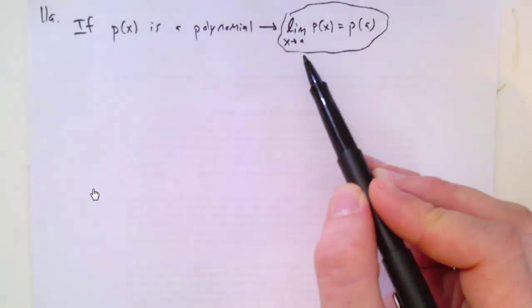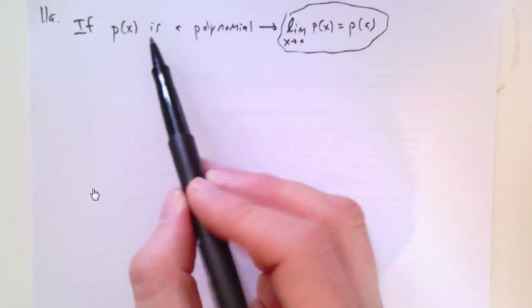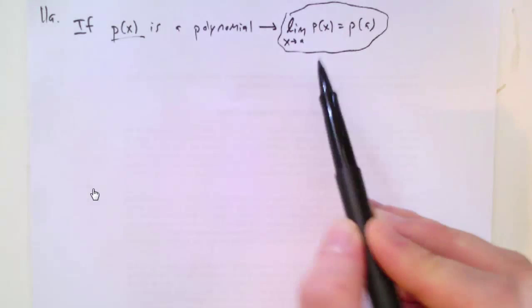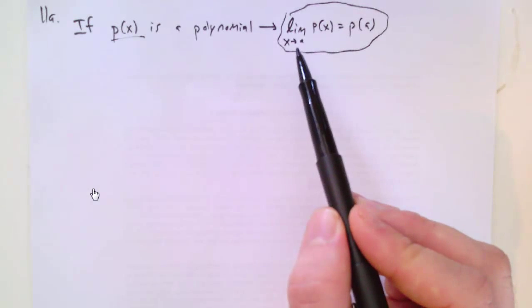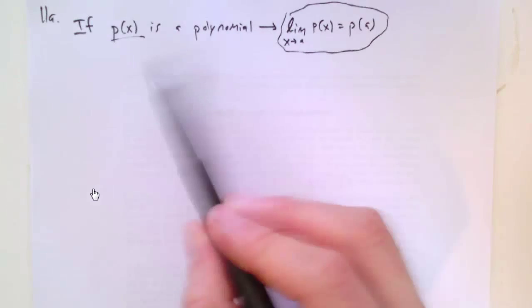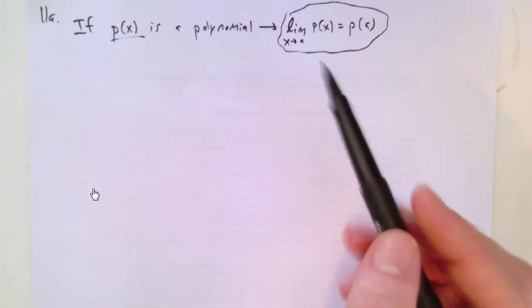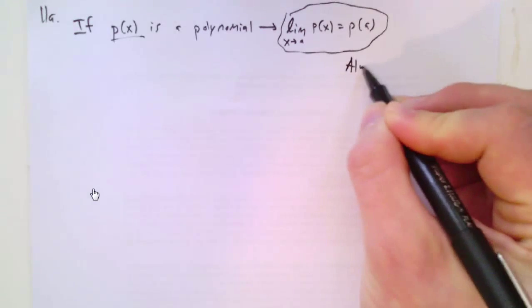This is the definition of P being continuous at a point A. So the question is, if P of X is a polynomial, does it have to be continuous at some arbitrary point A? The answer is yes, because all polynomials are continuous functions on their entire domains. So this one is always true.